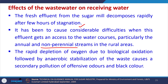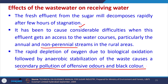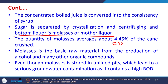Rapid depletion of oxygen due to biological oxygen demand, followed by anaerobic stabilization of the waste, causes secondary pollution with offensive odour and black color. This is the key challenge with sugar industry effluent. The concentrated boiled juice is converted into syrup consistency, and sugar is separated by crystallization and centrifugation. The bottom liquor is called molasses or mother liquor, and its quantity may vary around 4.45 to 5 percent of the cane crushed. Molasses is the basic raw material used in alcohol production, and molasses storage is now done in lined pits to prevent groundwater contamination.